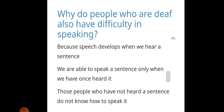Why do people who are deaf also have difficulty in speaking? Those who are deaf have difficulty in speaking because speech develops when we hear. If we are not hearing from birth, speech cannot develop. We are able to speak a sentence only when we have once heard it. So, those people who have not heard a sentence do not know how to speak it — they have both hearing and speaking difficulty.